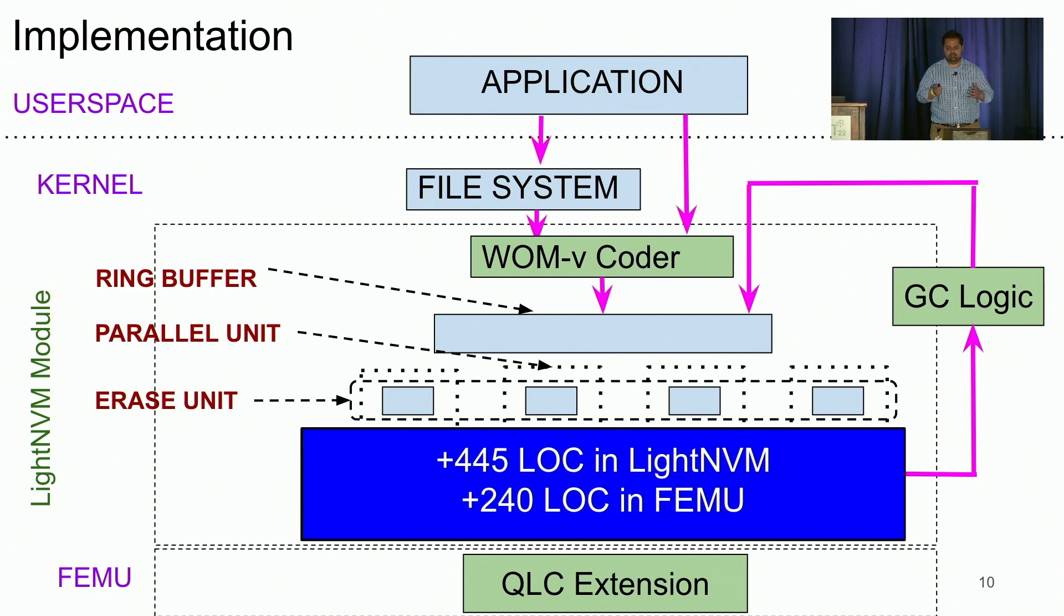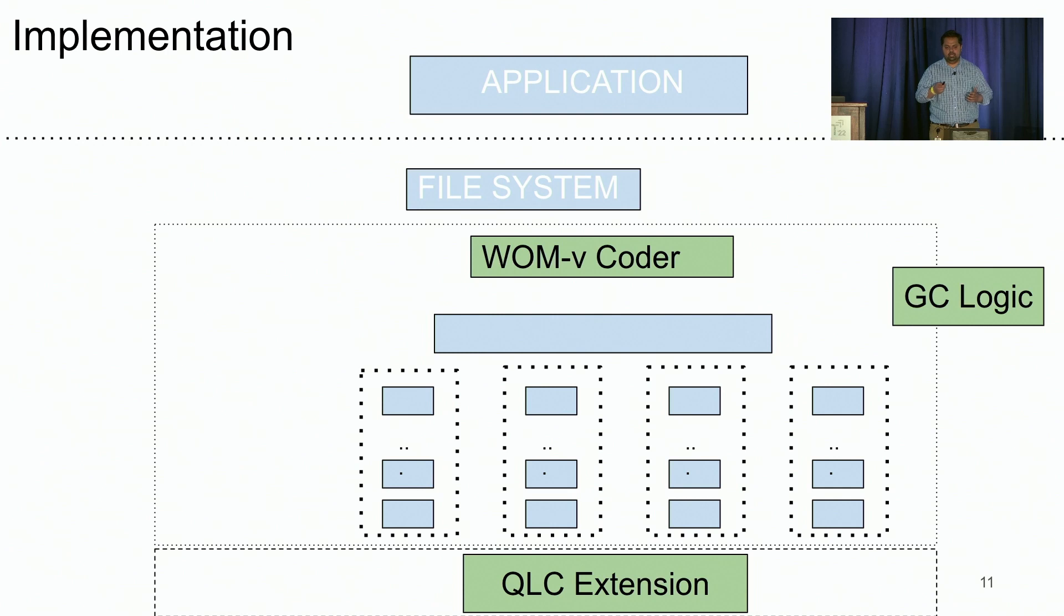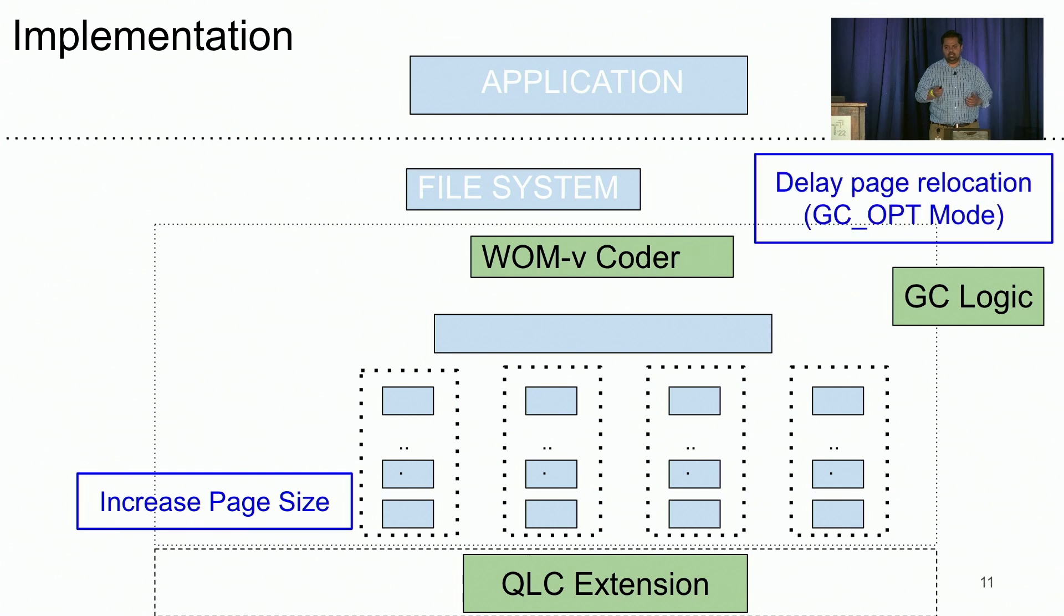Overall, we implement our approach in 700 lines of code. We make a number of implementation decisions while implementing our WOM V code. We increase the page size to accommodate for space amplification in WOM V codes. We employ delayed page relocation, so we do not relocate a page until the maximum generation of the page has reached. And finally, we completely eliminate read amplification from WOM V codes using a novel optimization, which we call no read mode, where all cells in an erase unit are always kept at the same generation.